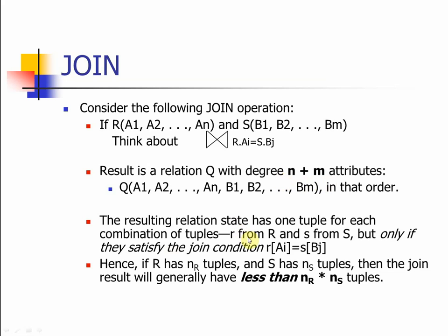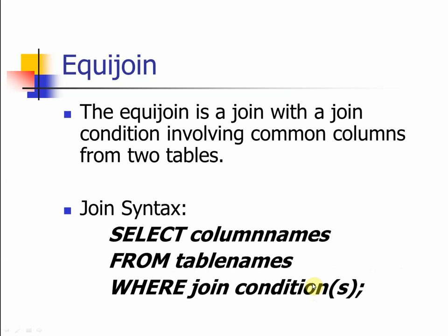After the SELECT, the number of tuples is usually less than the tuples in the first table multiplied by the tuples in the second table. That's the general case — after the join condition, you filter out a lot of information. The join condition can be anything; if you write something meaningless, you'll end up with the same result as the full Cartesian product. An equijoin is a join with a condition involving common columns from two tables, and this is the general syntax for join operations.